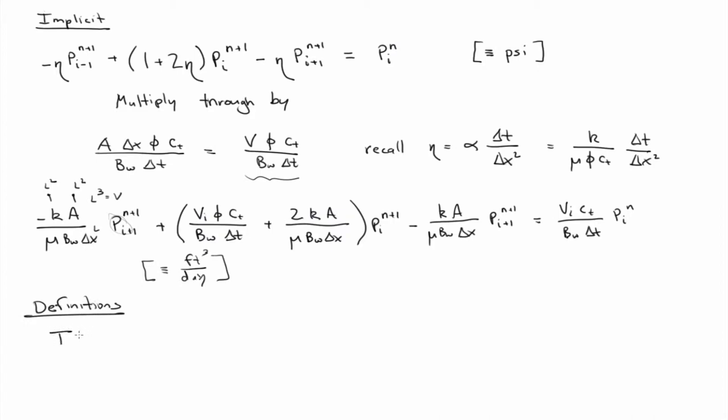So let's introduce some definitions. We're going to call T transmissibility. And it's going to be equal to Ka over mu BW delta x, right? So that has units of, like in English units, Mila-Darcy per foot centipoise. Mila-Darcy foot centipoise.